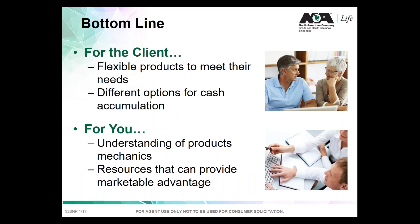The bottom line for indexed universal life products is that IUL provides all the flexibility that universal life provides, plus different options for cash accumulation — as opposed to just a fixed interest rate. It provides the ability to potentially earn more, knowing you can always go back and allocate to the fixed account if you'd like. Hopefully as an agent you now have a better understanding of IUL mechanics, and North American has resources, agent guides, marketing guides, and tools to help you.